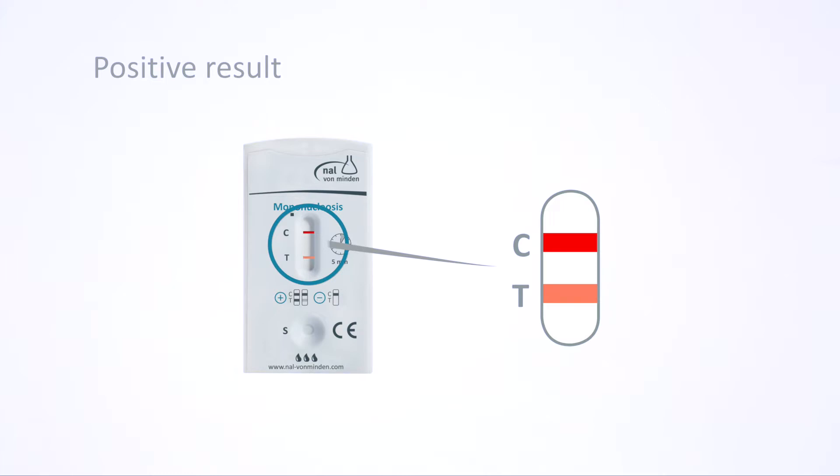The color intensity in the test line region may vary depending on the concentration of the analyte present in the sample. For this reason, any shade of color in the test line region should be considered positive. Note that this is a qualitative test only and it cannot determine the analyte concentration in the sample.